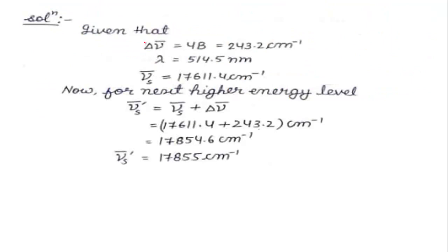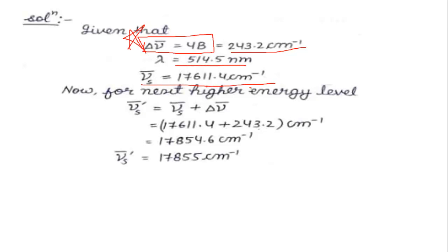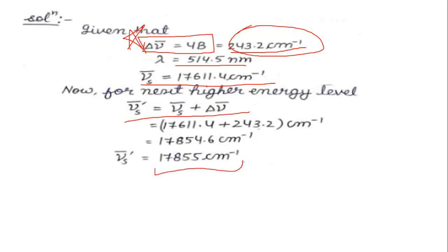In the S-branch, consecutive spacing is 4B, whose value is given as 243.2 cm⁻¹. Lambda and the current Stokes wavenumber ν_S are given. So ν_S' = ν_S + Δν, where Δν = 4B = 243.2 cm⁻¹. Adding these gives the next Stokes line at 17855 cm⁻¹. This was an easy question.